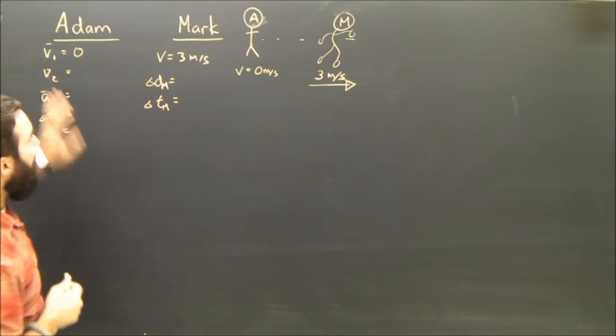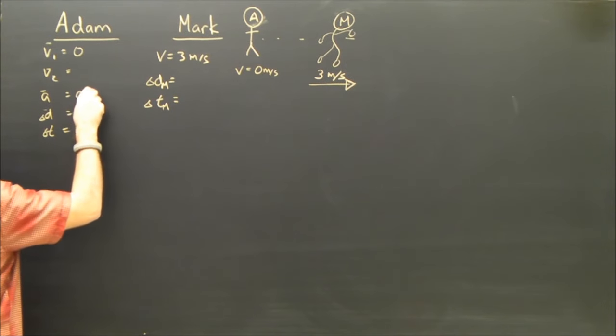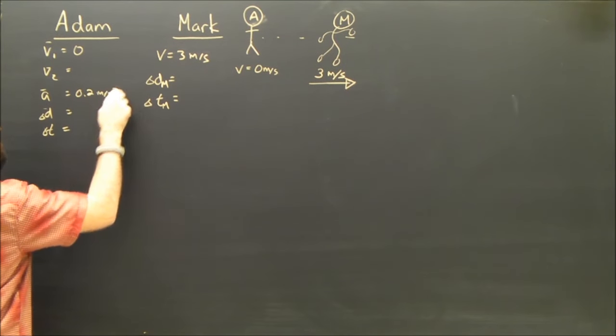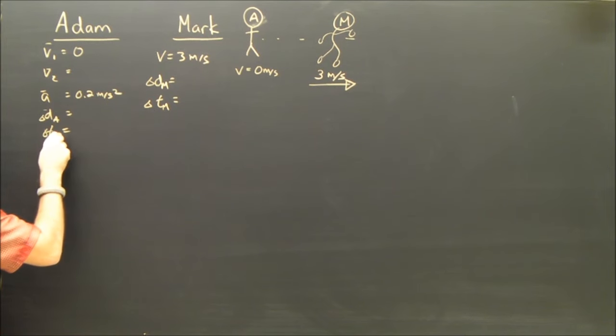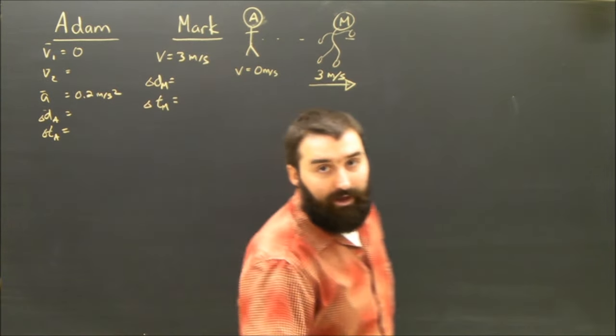So v1 for Adam is 0, and he's accelerating. It's set at 0.2 meters per second squared. And here, I'm going to write da and I'm going to write ta, the displacement of Adam and the time for Adam.